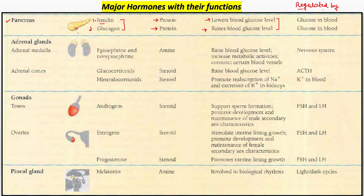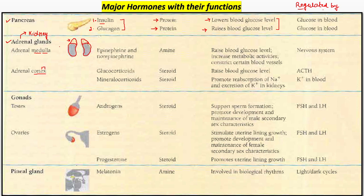Next agar hum gland par chalte hain, that is adrenal gland. Agar aap adrenal glands ki baat kar rahe ho, aap baat kar rahe ho kidneys ki. Kidney mein ek chhoti gland jo hai, woh present hoti hai on the top of the kidney. Aap adrenal glands jo kidney ke oopar present hain, unke bhi doh regions aap dekhte ho — medullary region, yaani aap middle/inner mein baat kar rahe ho, aur cortex region, yaani ki aap exterior mein baat kar rahe ho.